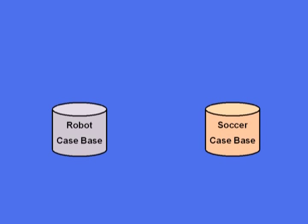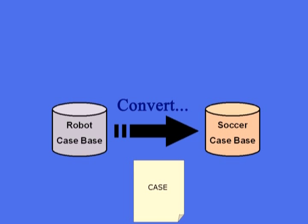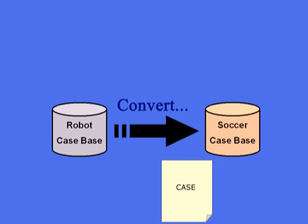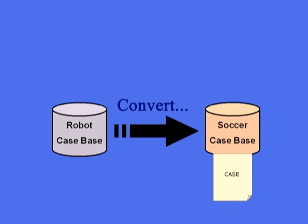Since all of the information the agent has is contained in its case base, we can even use the case bases to transfer knowledge between different domains. For example, if the agent observed a behavior in the robot domain, we can convert that case base so the agent can perform the behavior in the soccer domain. We just need to perform a mapping between both the inputs and the outputs of the two domains.